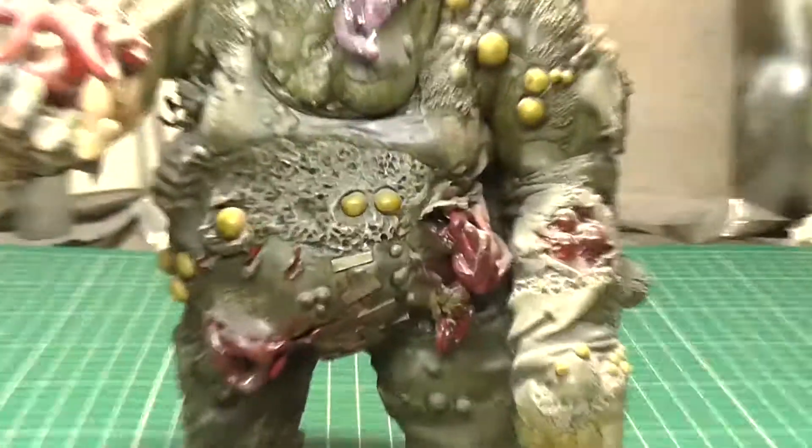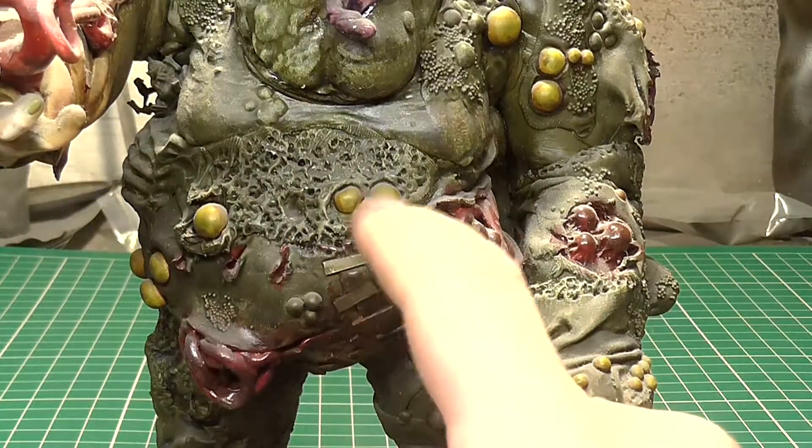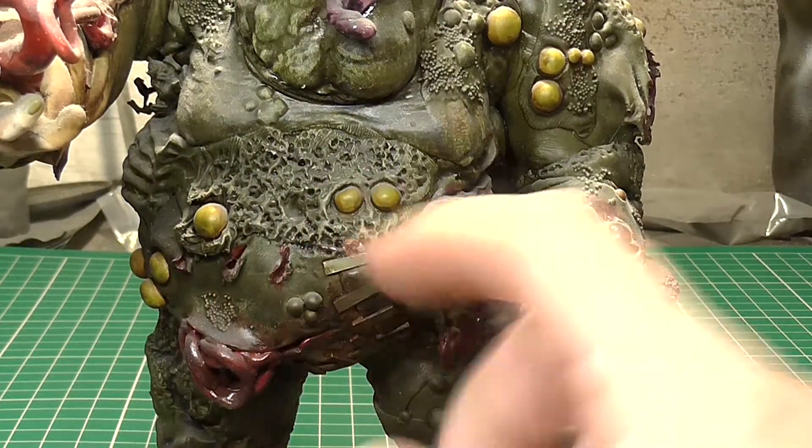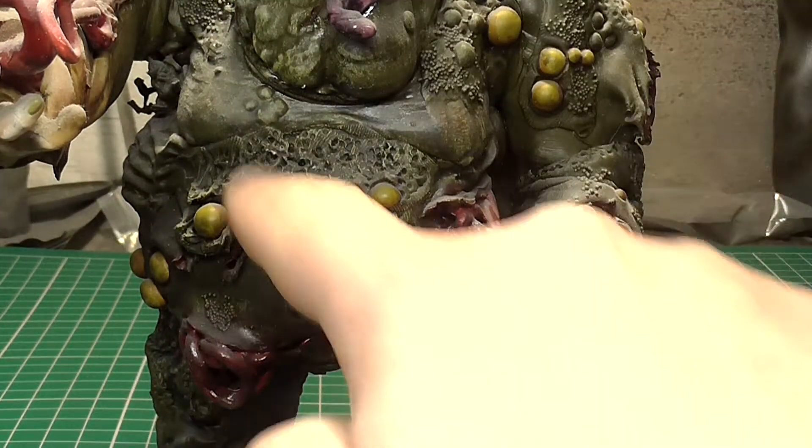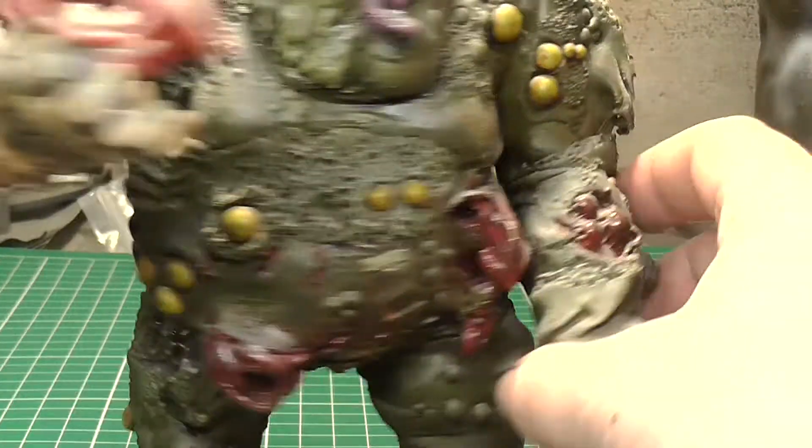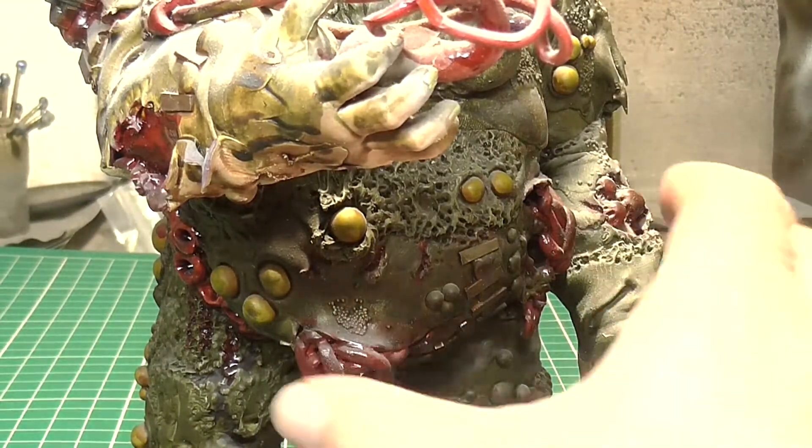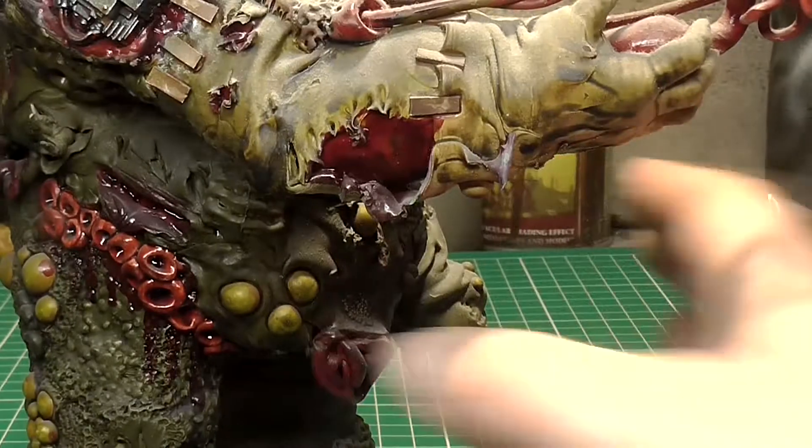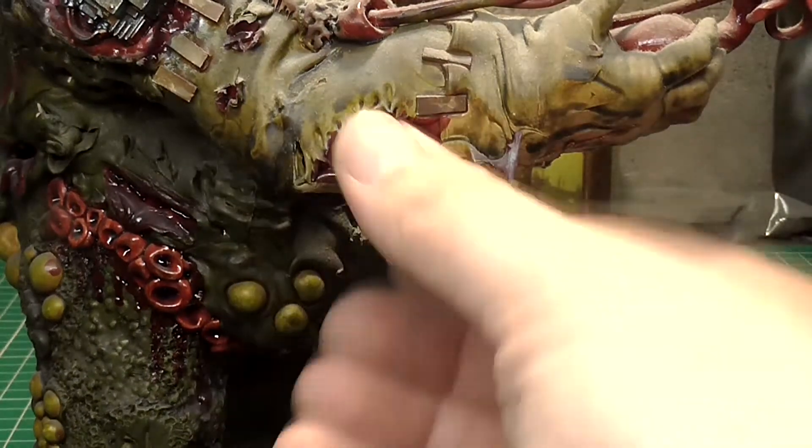So, for example, on it, you can do things like these pustules. These pustules were green stuff balls rolled into a sphere and then chopped in half. You can do things like stippling here to make really gross looking flesh. You can do guts and things coming out there. You can even do things like sloughed off skin. Because once you adhere it...